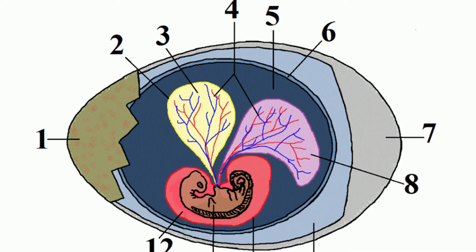Reptile eggs are amniotic, meaning they have a fluid-filled bag surrounding the embryo. This prevents the egg from drying out, so they can lay their eggs on dry land.